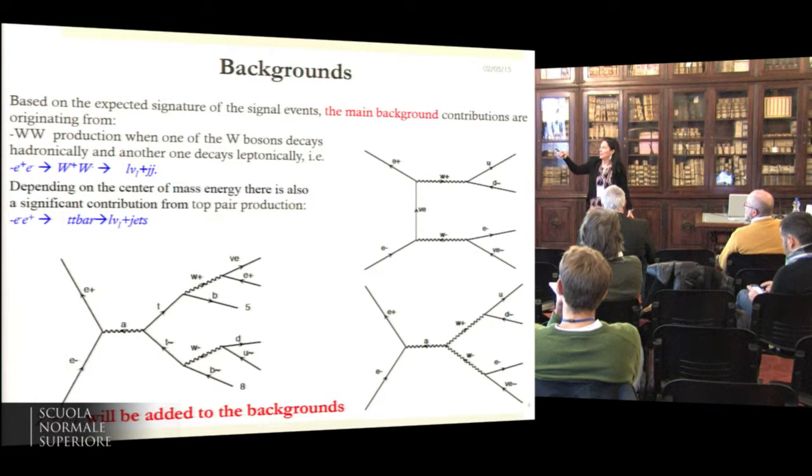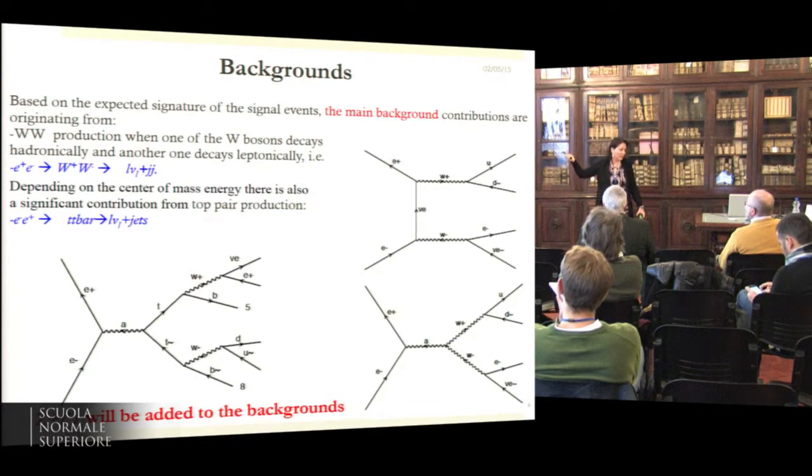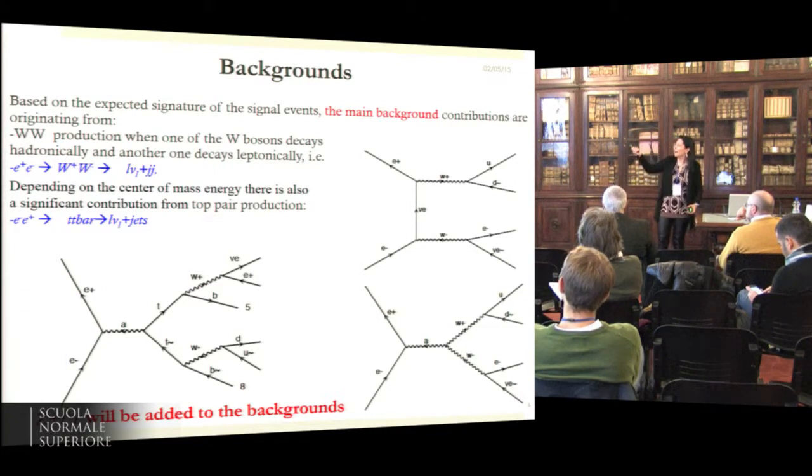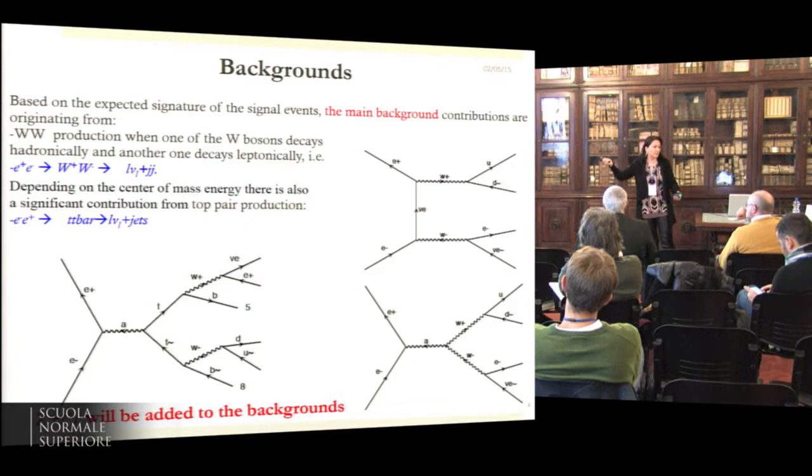My comment is that this is work in progress—in this TT bar background this is a pure standard model background. In principle we should have also the addition of the anomalous vertex in that. So apparently with the analysis they could remove that but it needs to be studied.